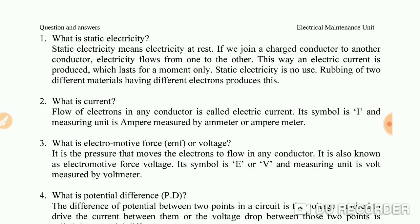Static electricity means electricity at rest. If we join a charged conductor to another conductor, electricity flows from one to the other. This way an electric current is produced which lasts for a moment only. Static electricity is of no practical use. Rubbing of two different materials having different electrons produces this.